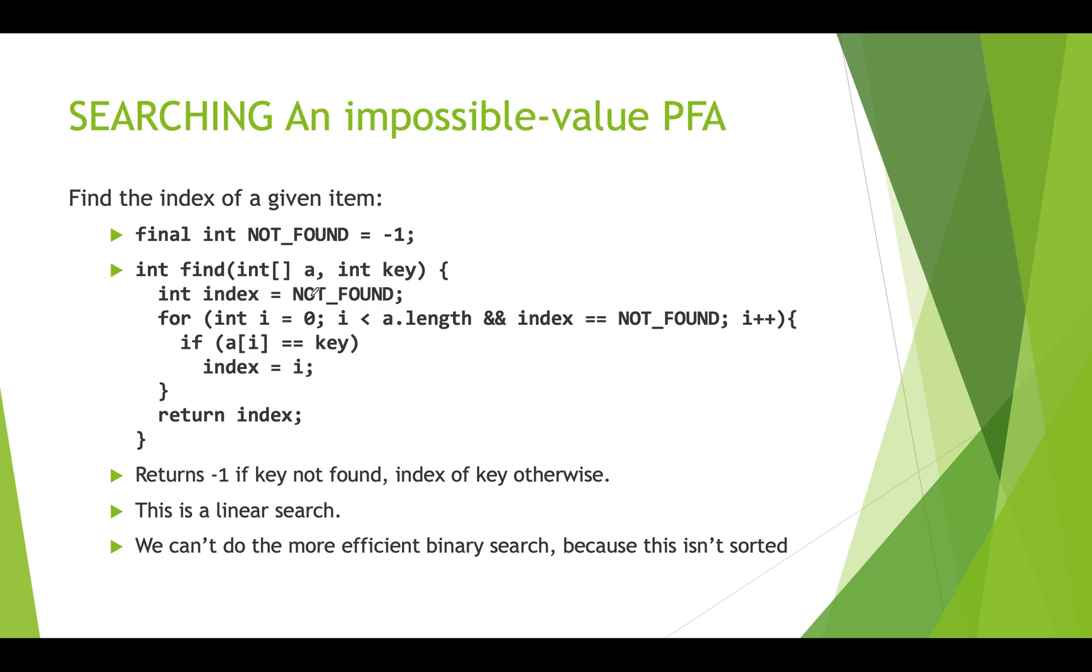So again, we're going to set an index and use our impossible value and initially say that we haven't found an index where this key is. We're going to loop through our array from 0 up to the length of the array. And we're going to keep on doing this while our index is equal to NOT_FOUND. And if for any slot in the array, the contents of that slot is equal to key, what we're searching for, then we set our index to i, which is our loop counter. And that means we'll stop iterating through this for loop because index will no longer be NOT_FOUND. It will be actually a number, a positive integer value. And then we'll return that index. So again, if we never found our key, index would still just be NOT_FOUND and we would be returning negative 1. But if we found the key, we'd be returning the index into the array.